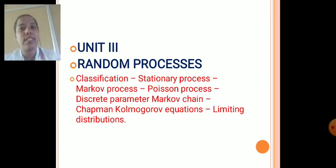After that, Unit 3, Random Process. In this random process, we are going to learn about the classification of random process. The first one is stationary process. After that, we are going to learn Markov Process. And then, Poisson Process. After that, discrete parameter Markov chain, Chapman-Kolmogorov equations. At last, limiting distributions. So, these are the things we are going to learn in random processes.